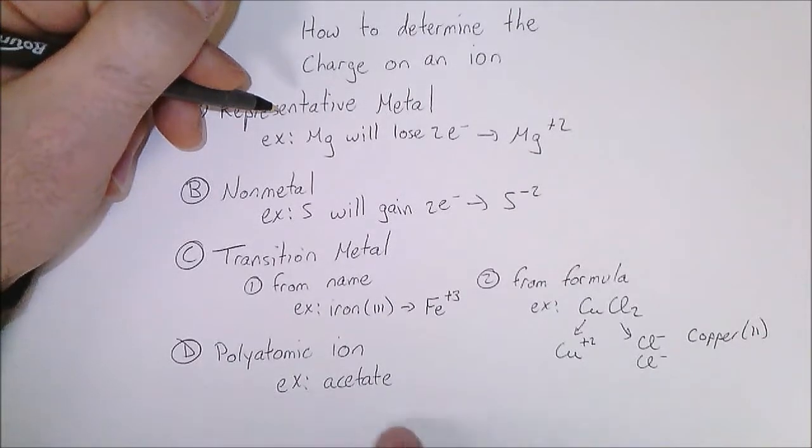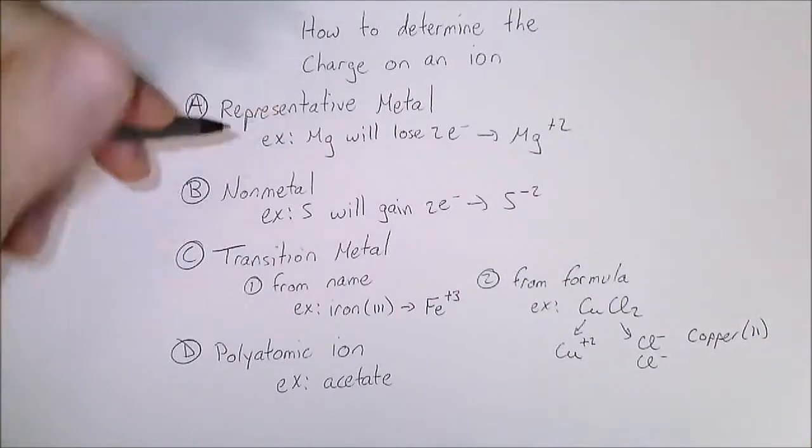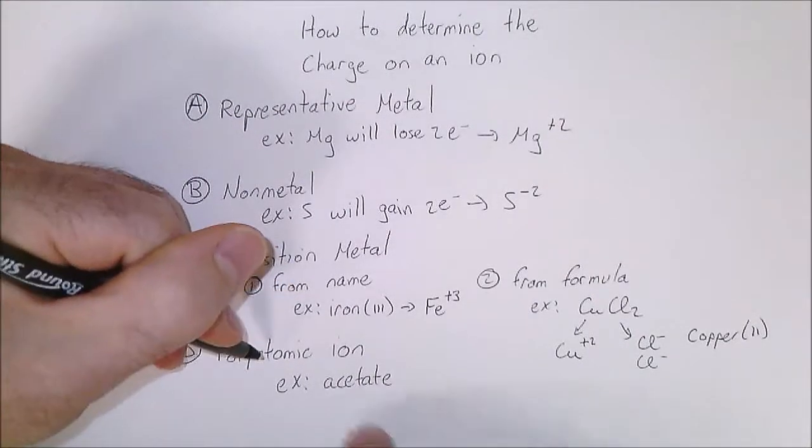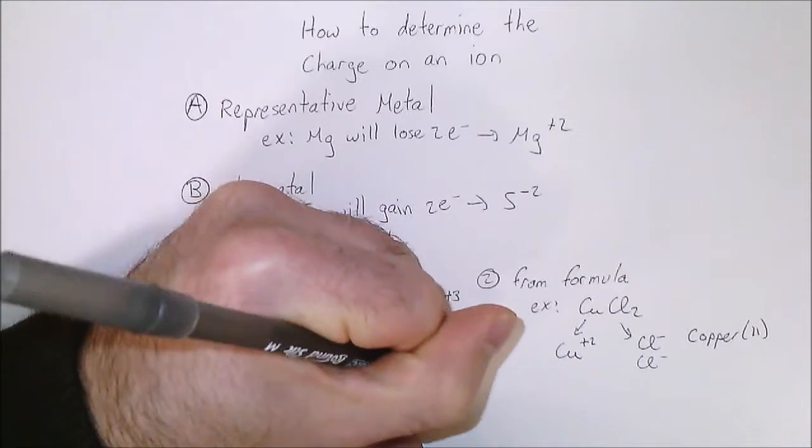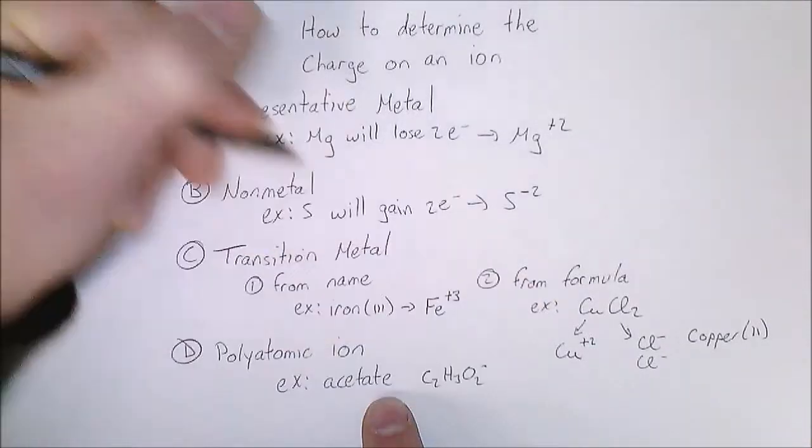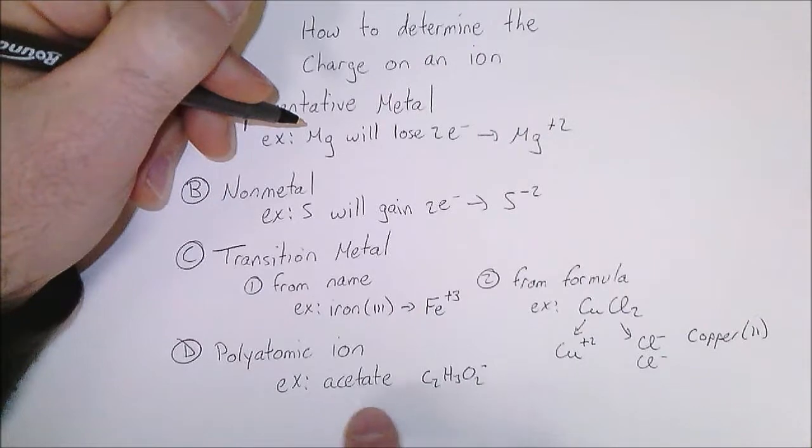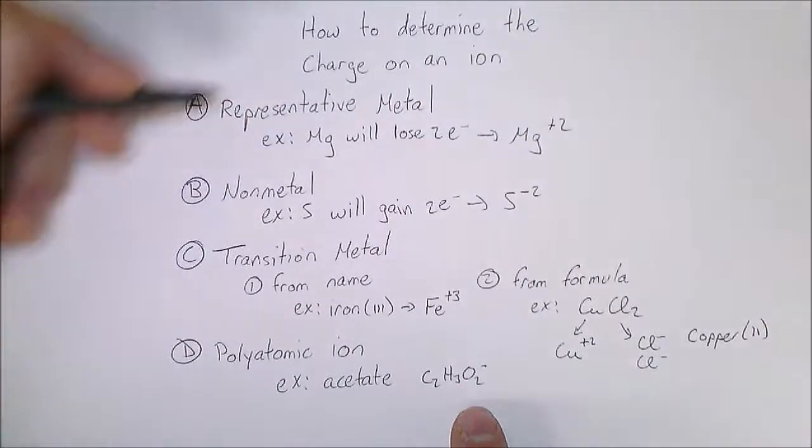The last way to determine a charge is by memory. We have memorized that acetate is C2H3O2 negative 1, and there are not any good patterns for memorizing the charges of these polyatomic ions, and so that work needs to be done.